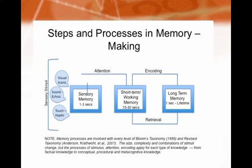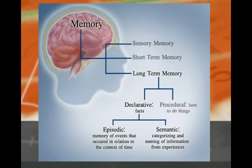Short-term memory always works closely with long-term memory. In long-term memory, information is stored based on type or classification. The two main categories are declarative memory and procedural memory. Declarative memory deals with facts, whereas procedural memory deals with how to do things. Declarative memory can be further broken down into episodic memory and semantic memory.